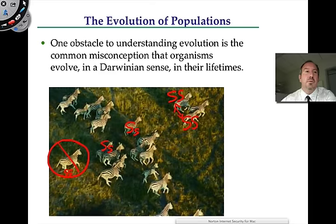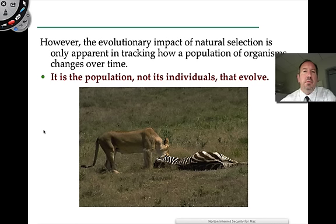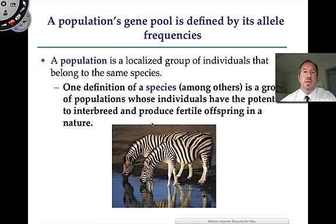One key thing about natural selection: if an individual dies, it's not evolving. But the survivors will have children, and that will impact the future of that population in terms of gene pool and allele frequency. So if you want to track whether evolution is occurring from generation to generation, you have to look at population change over time. The take-away message is that populations evolve, not organisms. So what is a population? What is a species? What is a gene pool? What is allele frequency? These are the important ideas we want to consider.